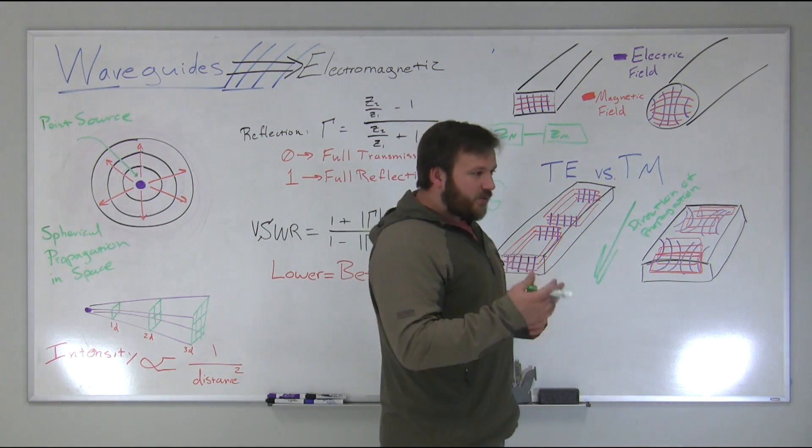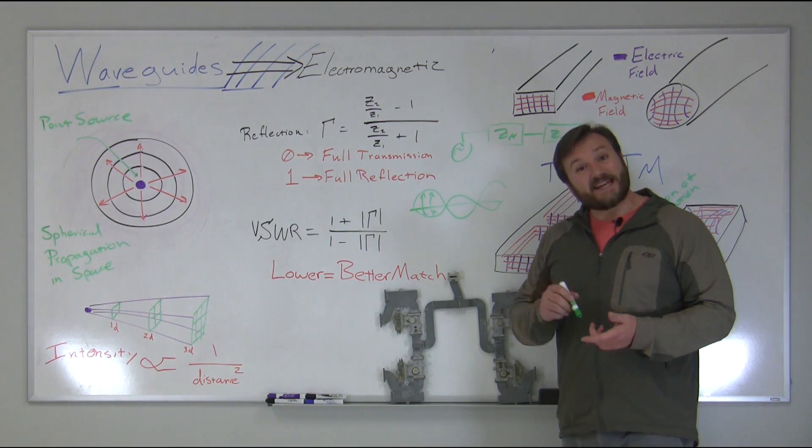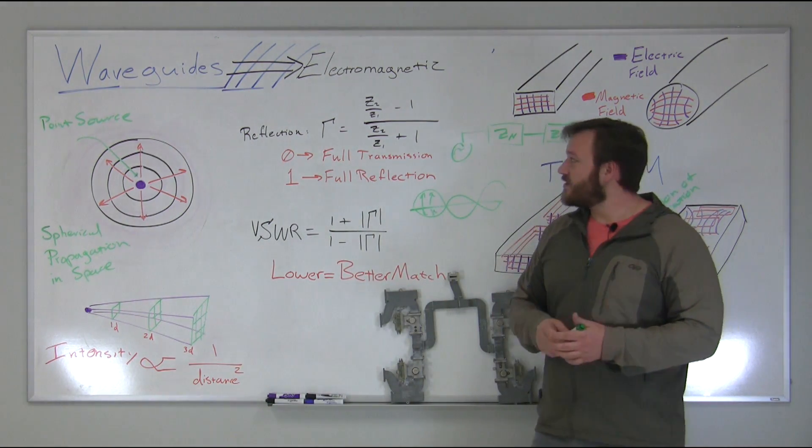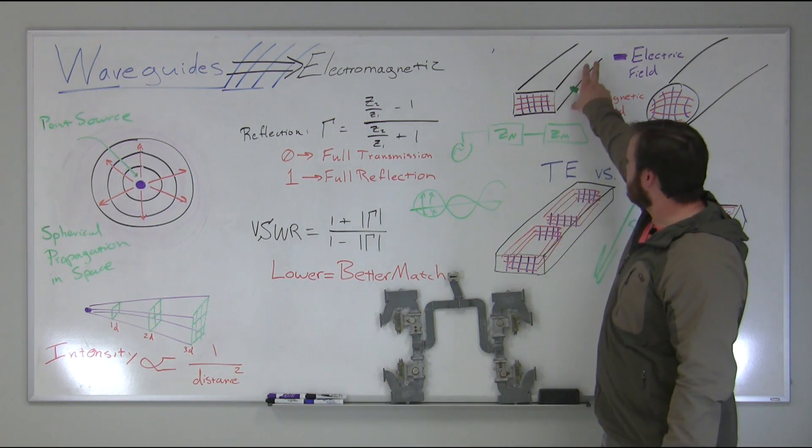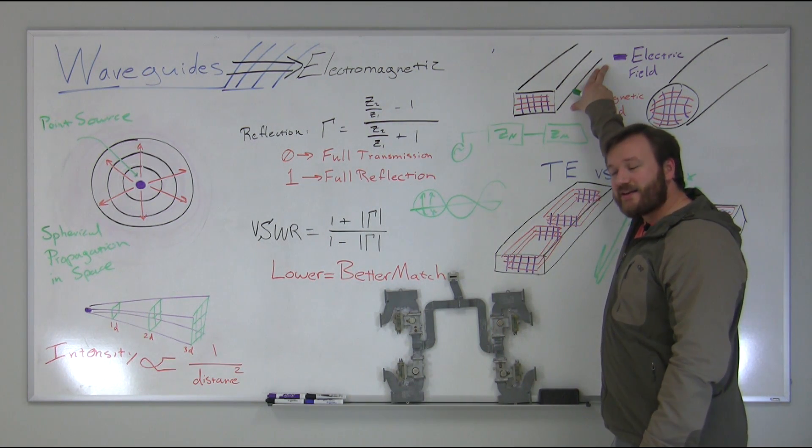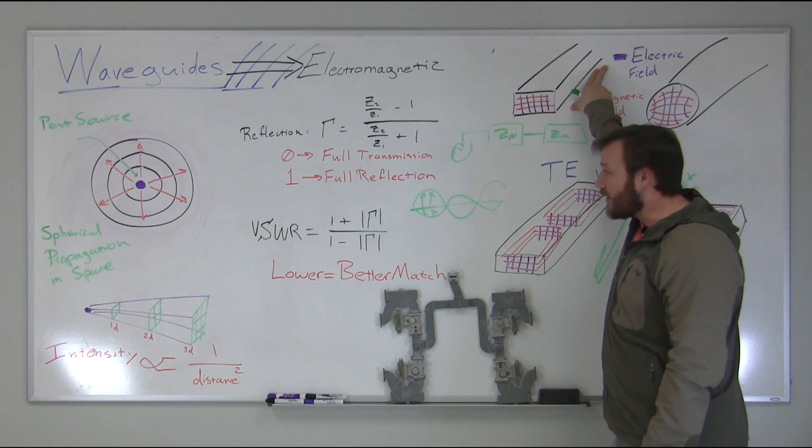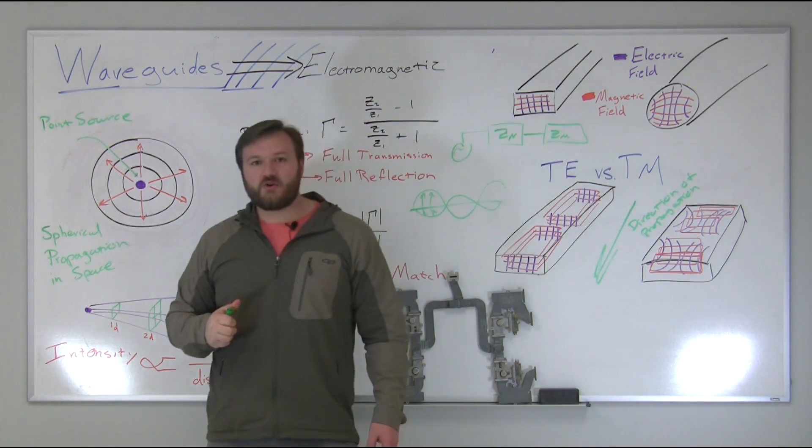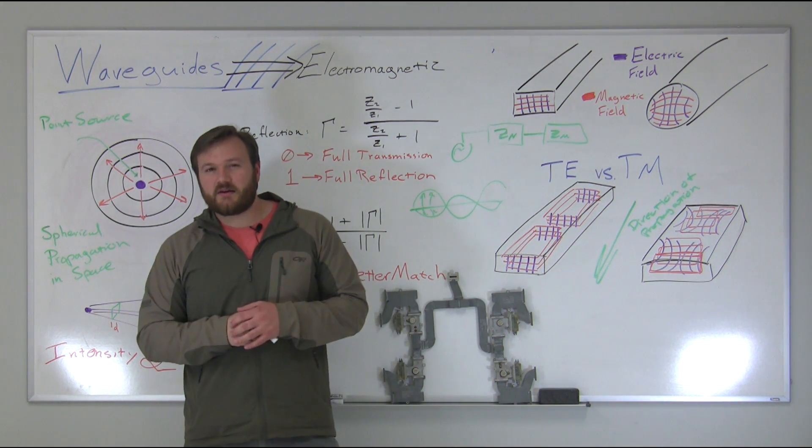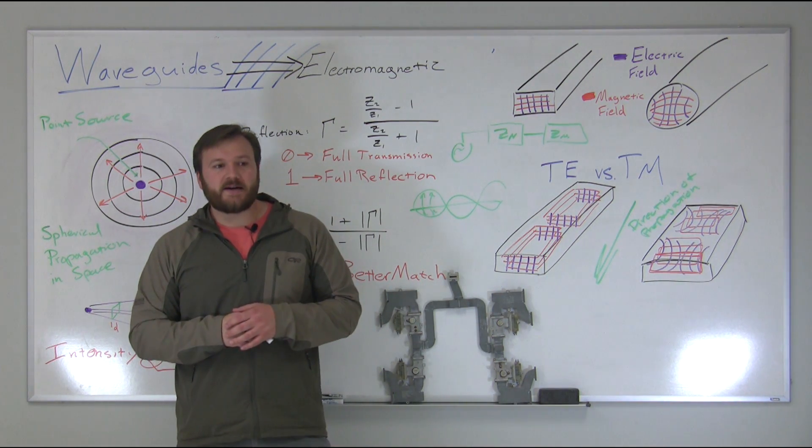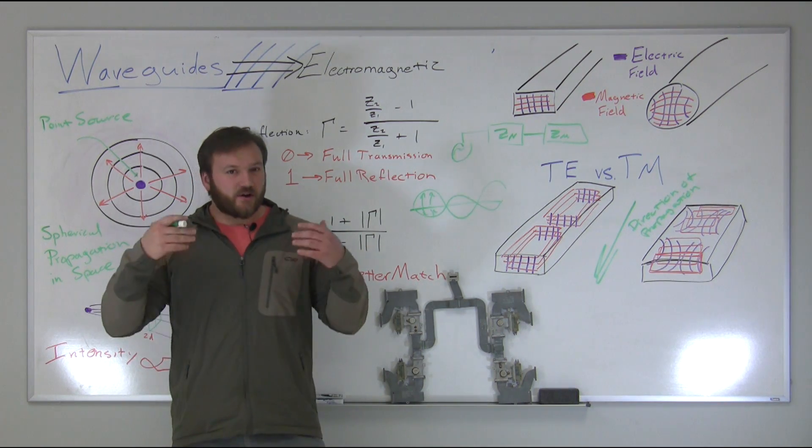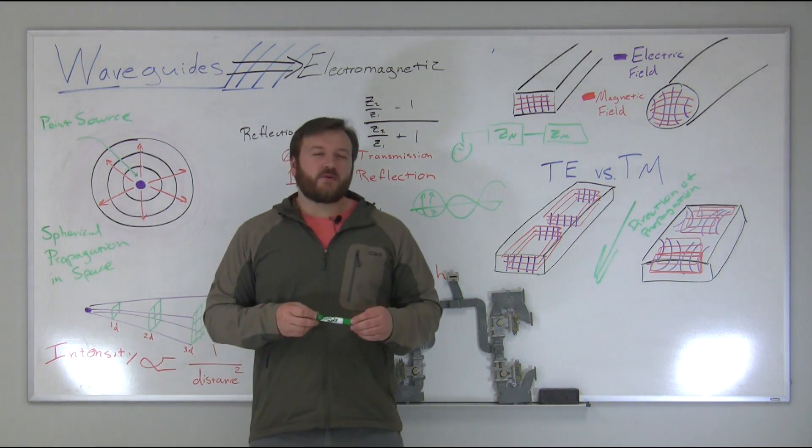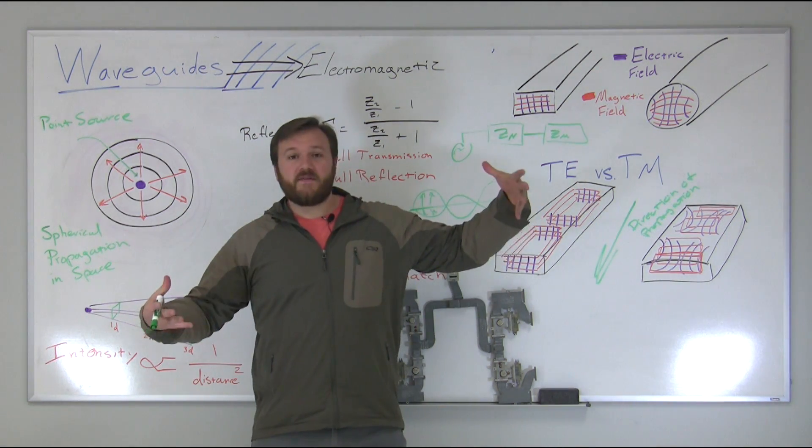Now, some other things that we didn't really touch on here are concepts such as skin depth. Skin depth being really where the currents are moving through the conductive material. Waveguides themselves must be conductive in order to allow, in order to have that energy travel down line. Now, something to remember is whenever you're using waveguides, you're going to experience losses differently than you will in coaxial systems. Waveguides very often get used for much higher frequency systems. And also, another thing to remember is the lower the frequency, the larger your waveguide is going to be.